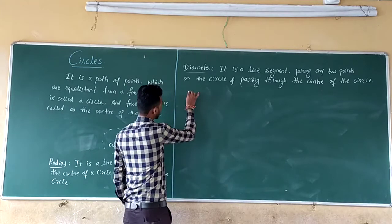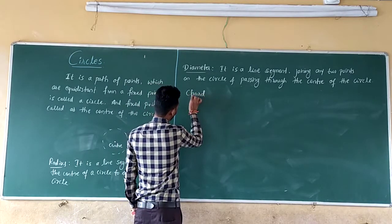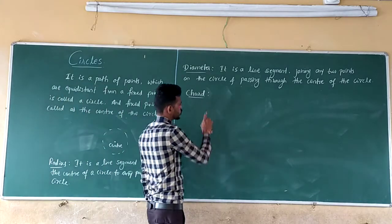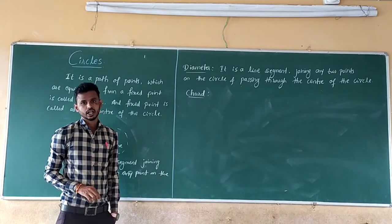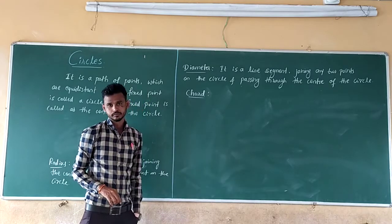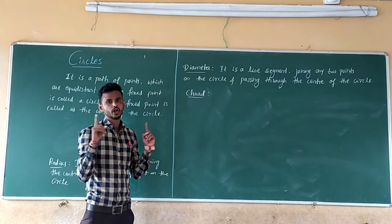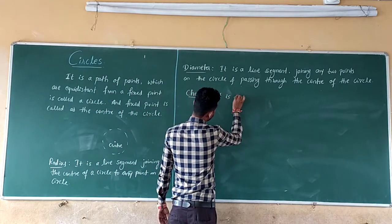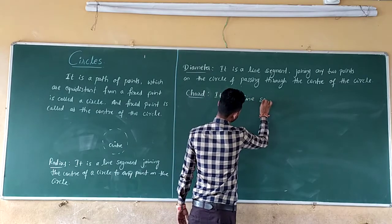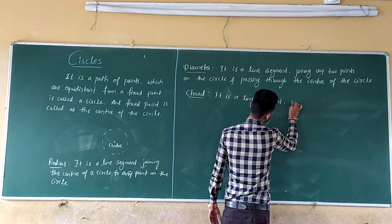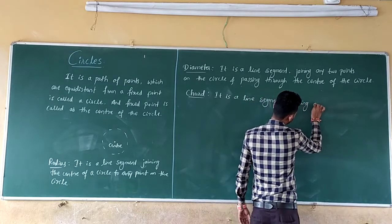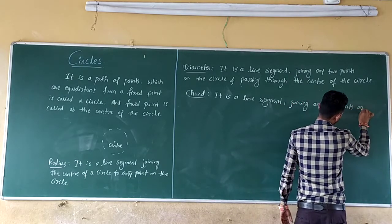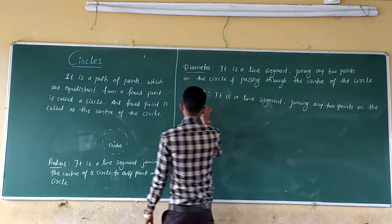Let us finish the definition — that is chord. So what is the chord? It is a line segment joining any two points on this circle. No need of passing through the center — just a line segment joining any two points on this circle.